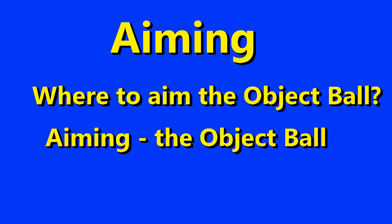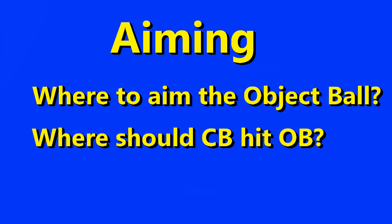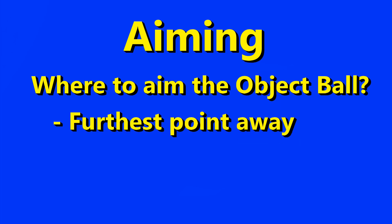I covered that in the aiming the object ball video — watch it to see where the object ball should go. Next, where should the cue ball hit the object ball given the object ball direction objective? The starting point is that the object ball should be contacted at the point on it furthest from the target.